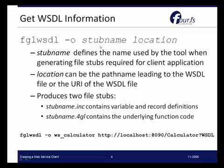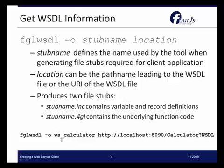The stub name that you use when using the utility allows you to determine what the name will be for the two files extracted from the WSDL file of the web service. In this example, we're simply using FGL WSDL, dash lowercase o, the stub name — we want to call it WS_calculator — and then the location of the WSDL information. The resulting files in this example will be WS_calculator.inc and WS_calculator.4GL.